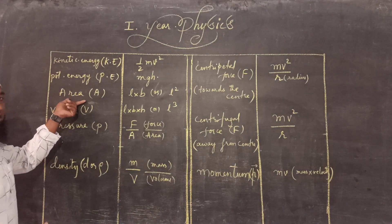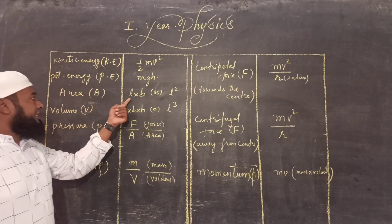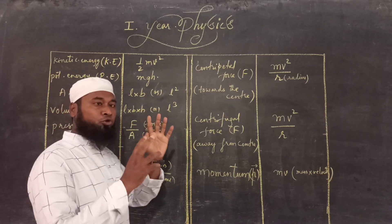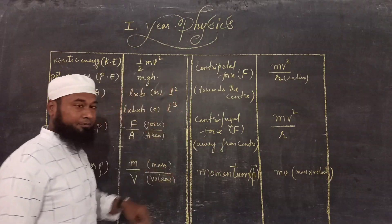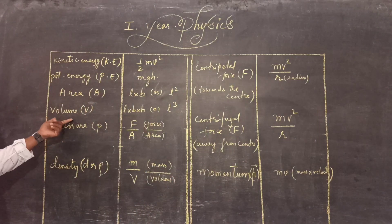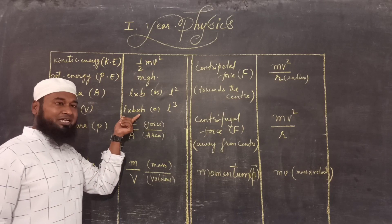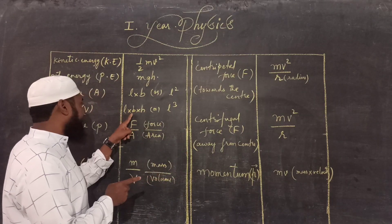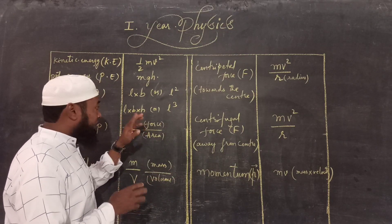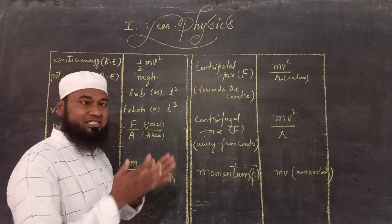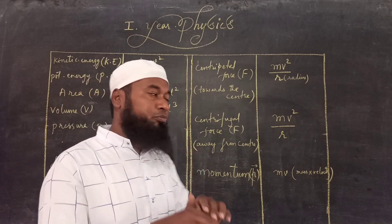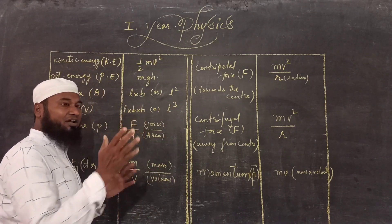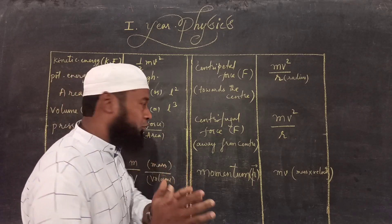The General Formula for Area is Length into Breadth. Also in physics, Length into Breadth can be written as L squared. Then you have Volume; the General Formula is Length into Breadth into Height. In this, B is Breadth and H is Height. In physics, Length into Breadth into Height can also be written as L cubed, because all three are one kind of length only.